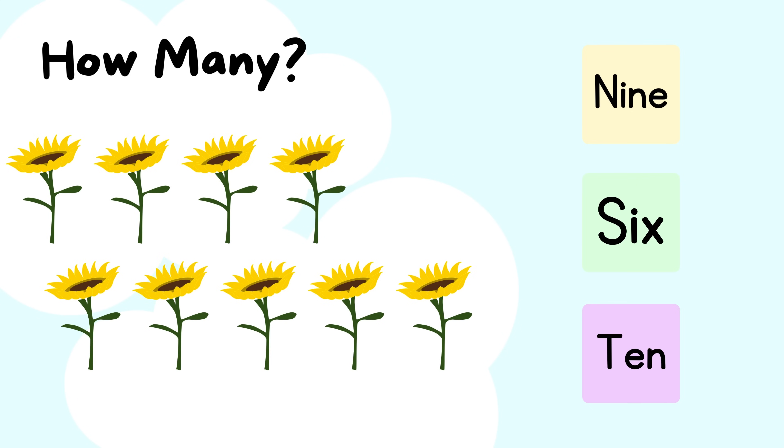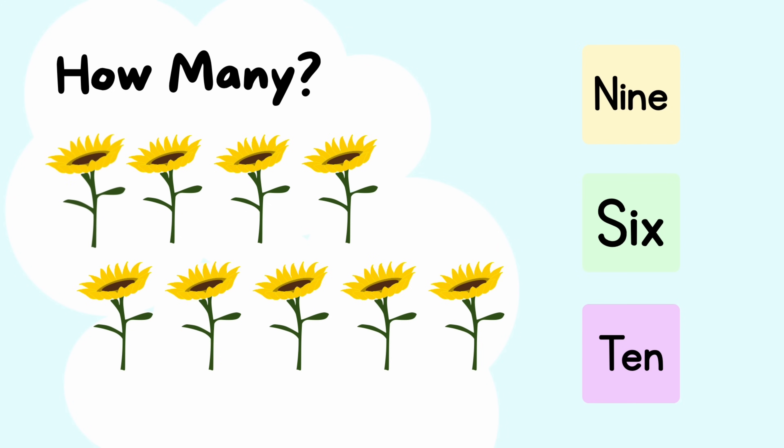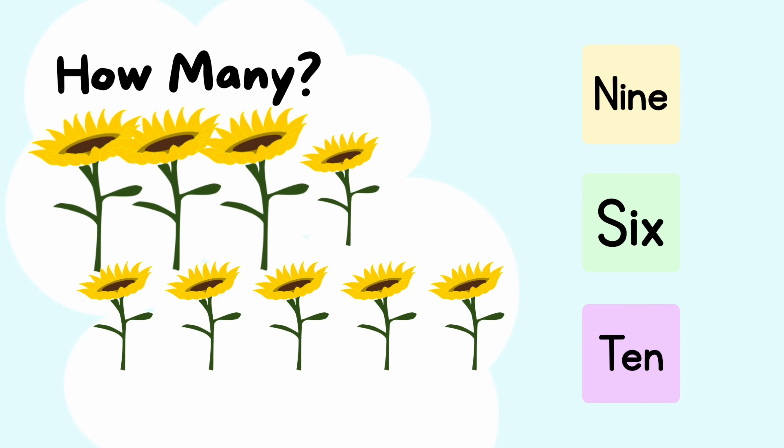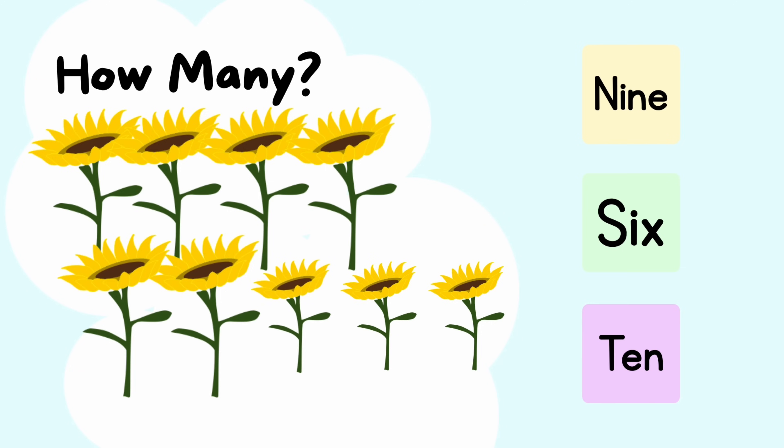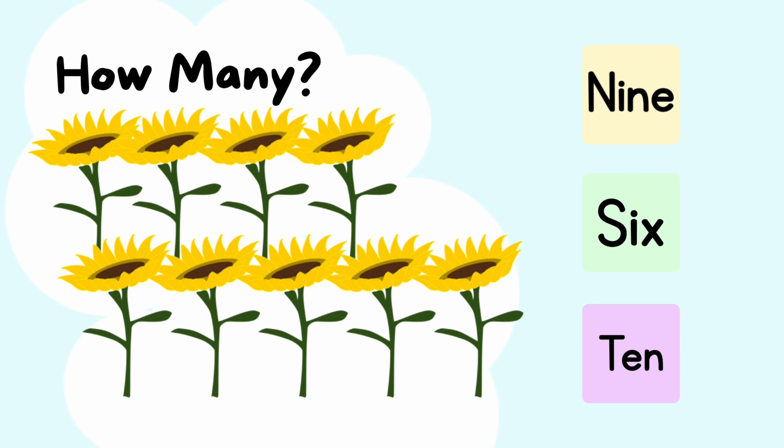Let's count the sunflowers and pick the correct number name for our answer. How many sunflowers can you see? Count with me: one, two, three, four, five, six, seven, eight, nine. Nine, N-I-N-E, is the correct number name for nine.